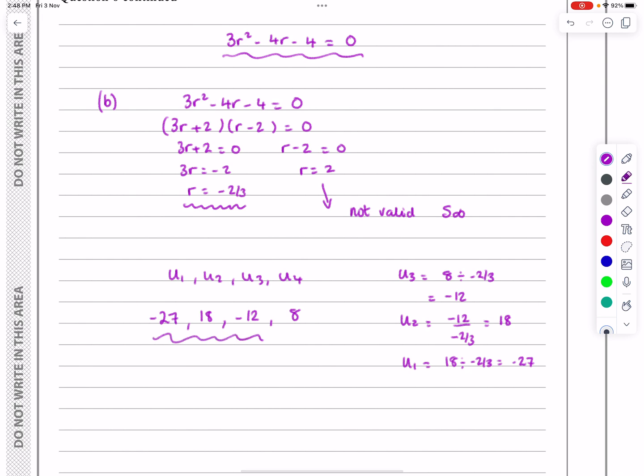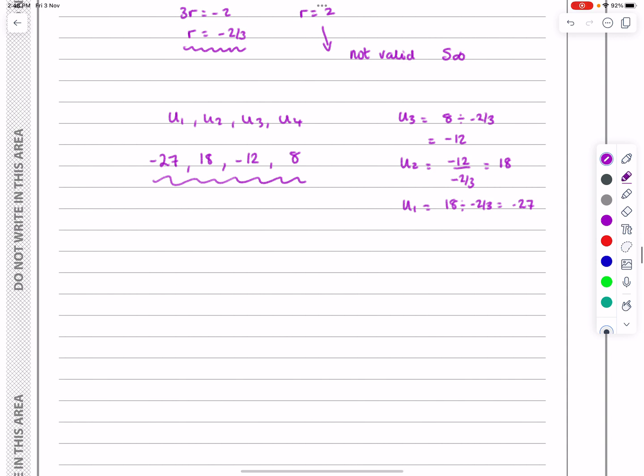So this is my geometric series here. And for the sum to infinity, what I need is A over 1 minus R. Remember, A is the first term. That's why I did all that work. I was trying to work out what A was, so I could go ahead and do it. So this is minus 27 all over 1 minus minus 2 thirds.